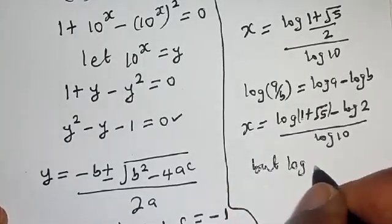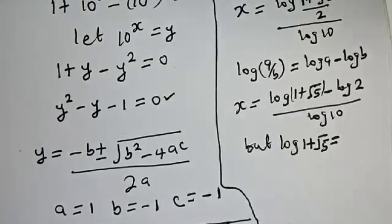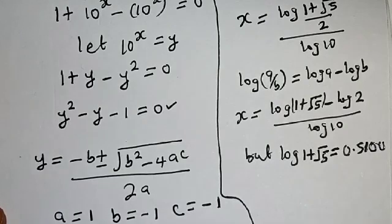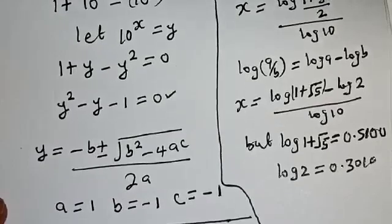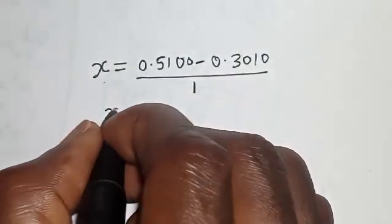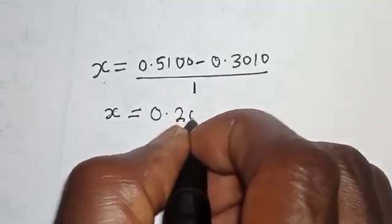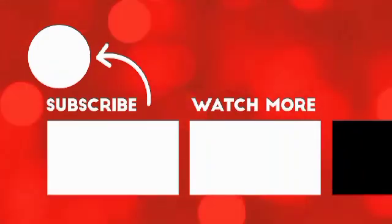Since log(1 + √5) equals approximately 0.5100 and log(2) equals approximately 0.3010, we substitute: s equals (0.5100 minus 0.3010) divided by 1, since log(10) equals 1. Therefore s equals 0.2090, and this is our final answer. If you enjoyed the class, please don't forget to like, share, comment, and subscribe. Thank you.